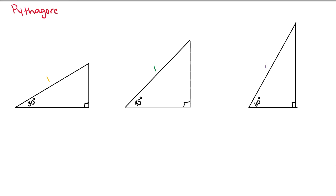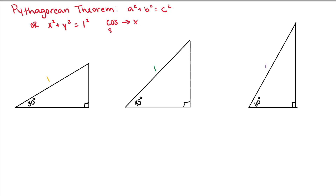We can identify one trig identity using the Pythagorean theorem. For the unit circle, we won't need to use this too much, but it's always good to know. Remember, Pythagorean theorem is a² + b² = c². If we look at our triangles within our unit circle, our a is our x, our b is our y, and our c is our hypotenuse. So we can represent that as x² + y² = 1². If our cosine corresponds to our x and our sine corresponds to our y, then we can rewrite this as cosine² + sine² = 1. This is a trig identity.